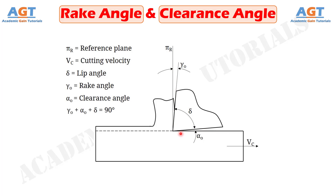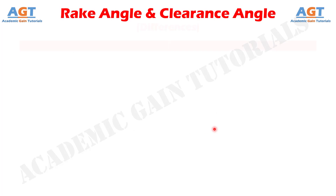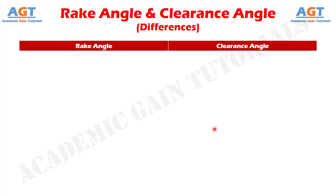By definition, rake angle is the angle of orientation of rake surface from the reference plane and measured on another plane. On the other hand, clearance angle is the angle of inclination of flank surface from the cutting velocity vector and measured on another plane. Let's look into the basic differences between rake angle and clearance angle in a tabular form.